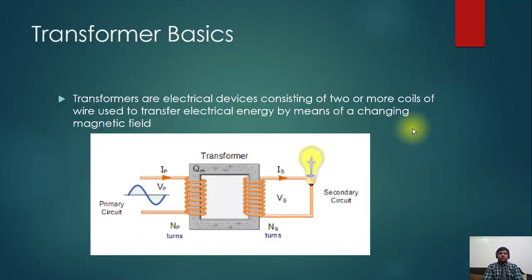Welcome guys, I hope you're enjoying my lectures. Now we will discuss transformer basics from a very basic level. Transformers are electrical devices consisting of two or more coils of wire used to transfer electrical energy by means of a changing magnetic field. In the picture you can see this is the coil.